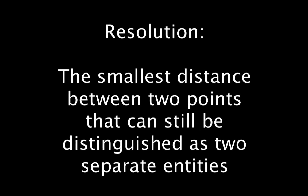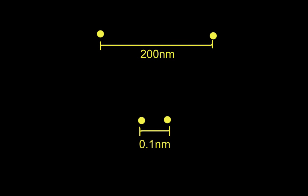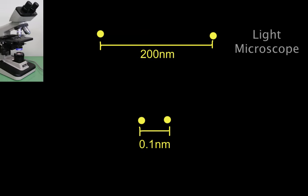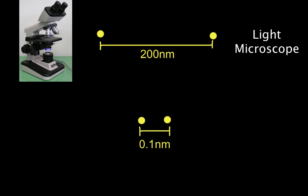Well, resolution is defined as the smallest distance between two points that can still be distinguished as two separate entities. So, in practical terms, this means that the smallest distance that you can tell two points apart using a light microscope is 200 nanometres.